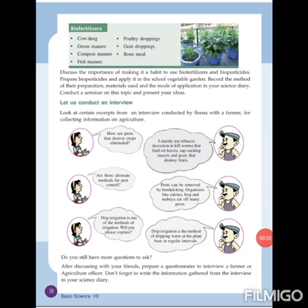Next, let's see bio-fertilizers. Bio-fertilizers include cow dung, green manure, compost manure, fish manure, poultry droppings, goat droppings, and bone meal. These bio-fertilizers are easily available and do not affect the soil negatively. They help to retain the fertility of the soil and promote the growth of the plant.